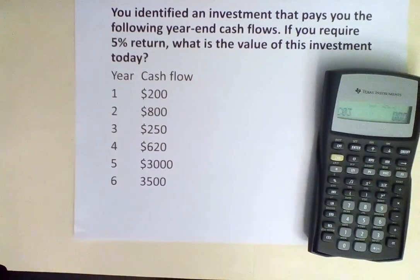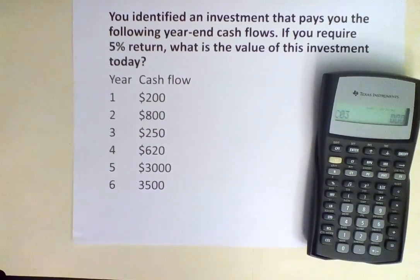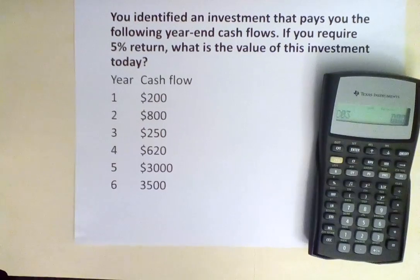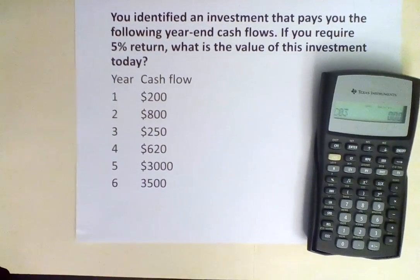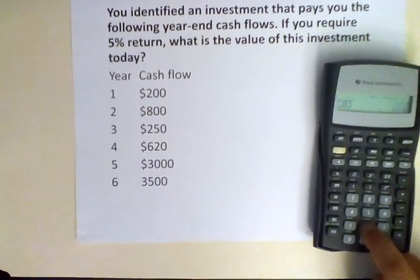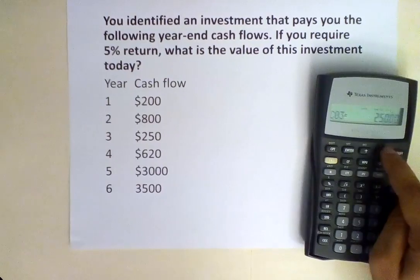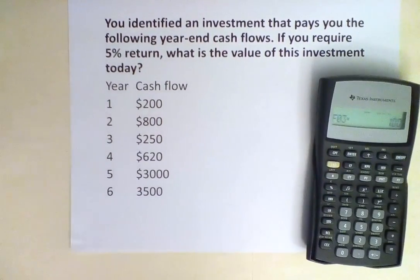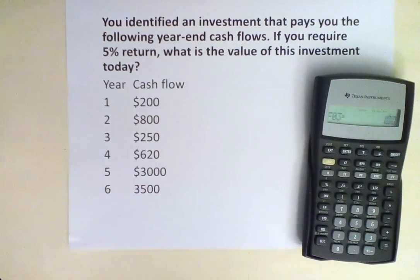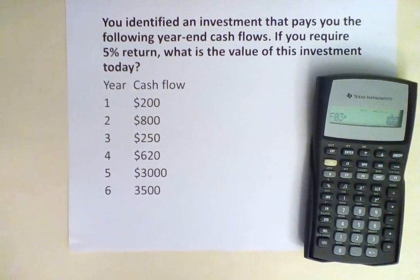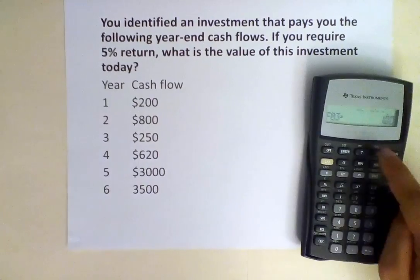Hit the down arrow and go to C03. The cash flow at year 3 is $250, so we input 250. Hit enter, then the down arrow. The frequency is just one time, so we keep it at 1.